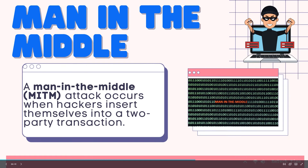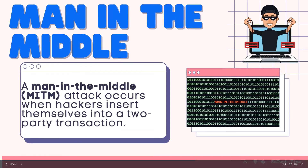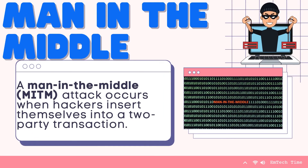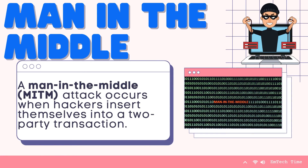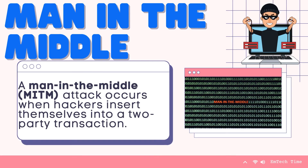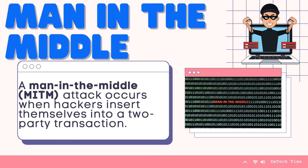The next type is a man in the middle. A man-in-the-middle, or MITM, attack occurs when hackers insert themselves into a two-party transaction. After interrupting the traffic, they can filter and steal data, according to Cisco.